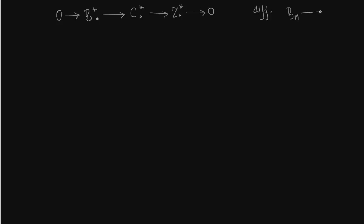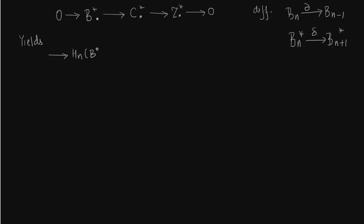This is an important difference. In the long exact sequence of homology groups we initially went from HN to HN minus 1. Here we will go from HN to HN plus 1, precisely because we are shifting to a higher dimension — from BN we are going to BN plus 1. The above short exact sequence of co-chain complexes yields the following sequence, which looks exactly like the homology sequence except that the indices instead of decreasing go from HN to HN plus 1.